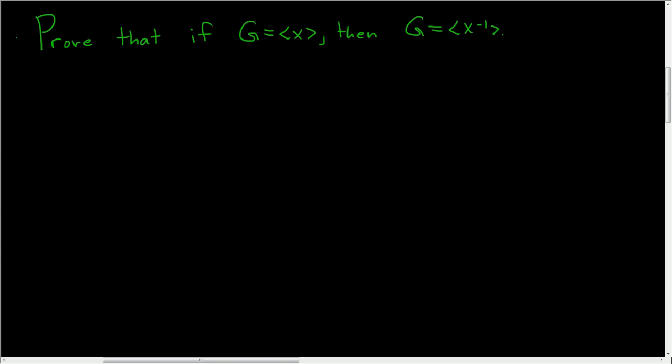Prove that if G is cyclic and generated by x, then G is also generated by the inverse of x.